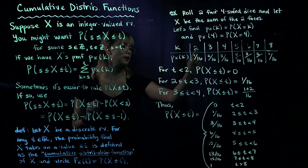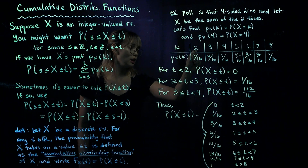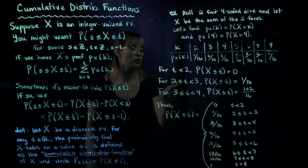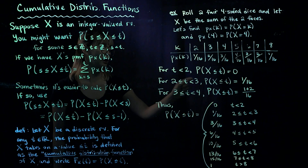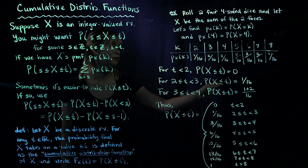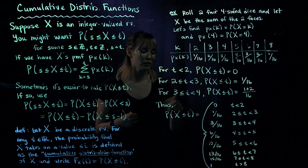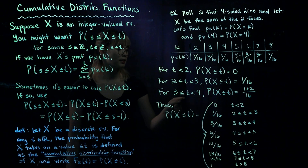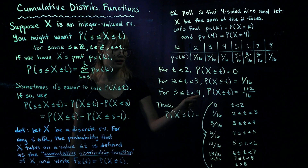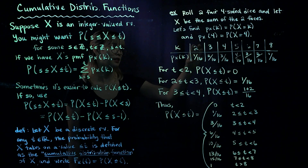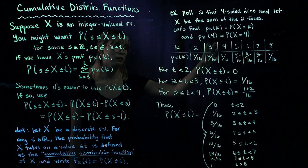Next, let's choose a value of t between 2 and 3 — allowing t to equal 2 but not 3 — so the interval is 2 ≤ t < 3. Then the probability that x is less than or equal to t is just the probability that x equals 2, which is 1/16. Now for t in the interval 3 ≤ t < 4, the probability x is less than or equal to t is the probability x equals 2 plus the probability x equals 3, giving us 1/16 plus 2/16, which equals 3/16.